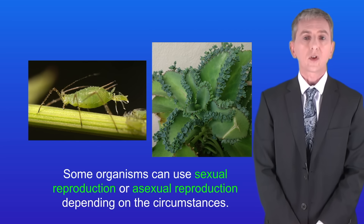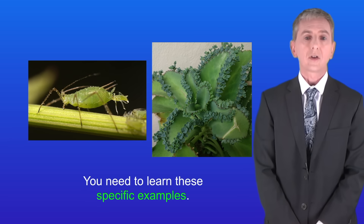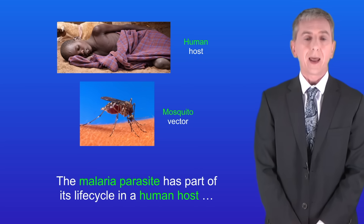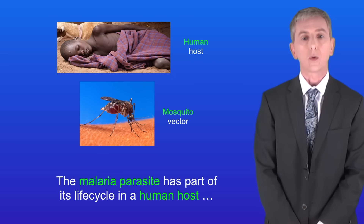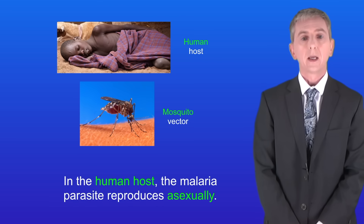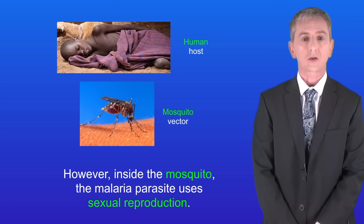Some organisms can use sexual reproduction or asexual reproduction depending on the circumstances, and you need to learn these specific examples. The malaria parasite has part of its life cycle in a human host and part of its life cycle in a mosquito vector. In the human host the malaria parasite reproduces asexually. However inside the mosquito the malaria parasite uses sexual reproduction.